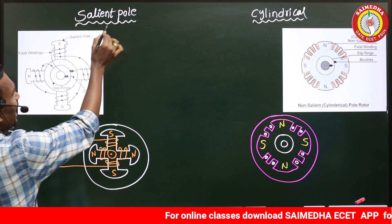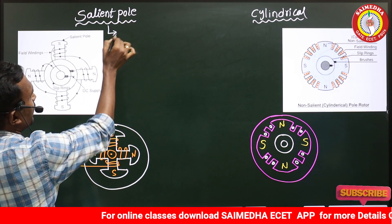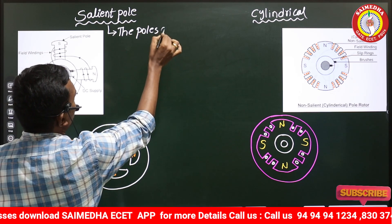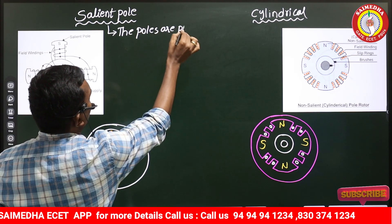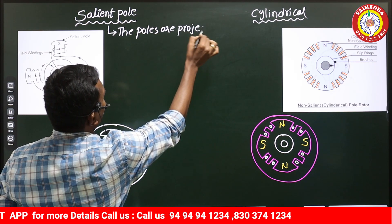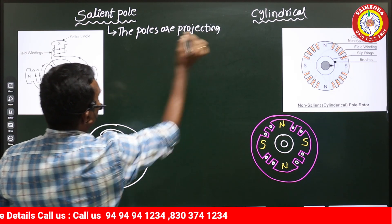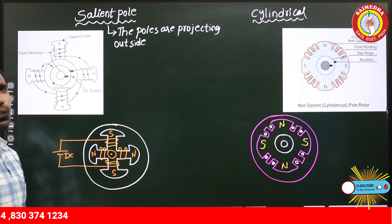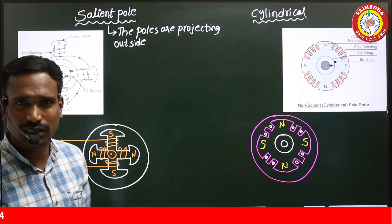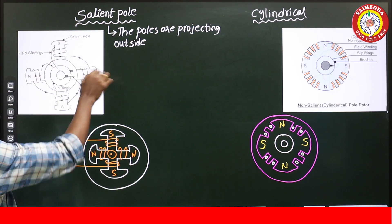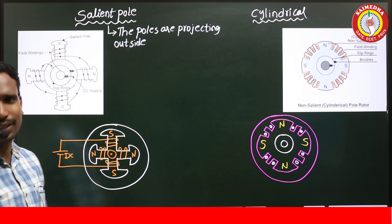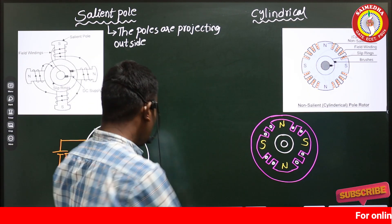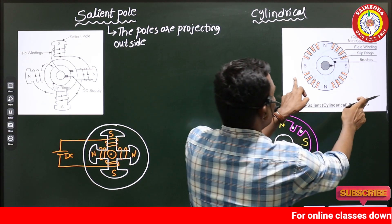Coming to the differences: in the salient pole type, the poles are projecting outside — that's why these are called projected poles or salient poles. Here the poles are projecting outside, but in the cylindrical type there are no projections at all — it is simply a smooth cylindrical type.